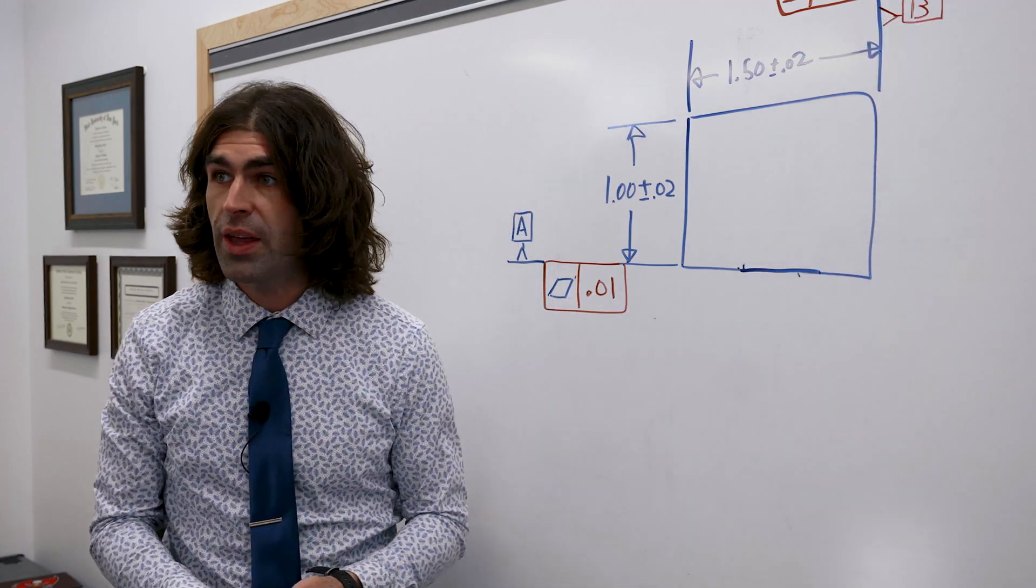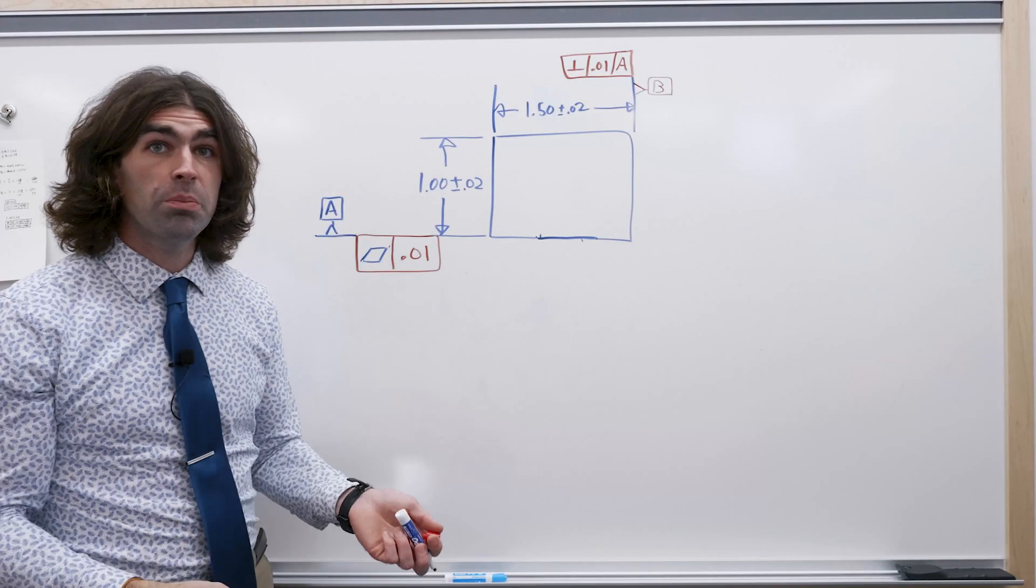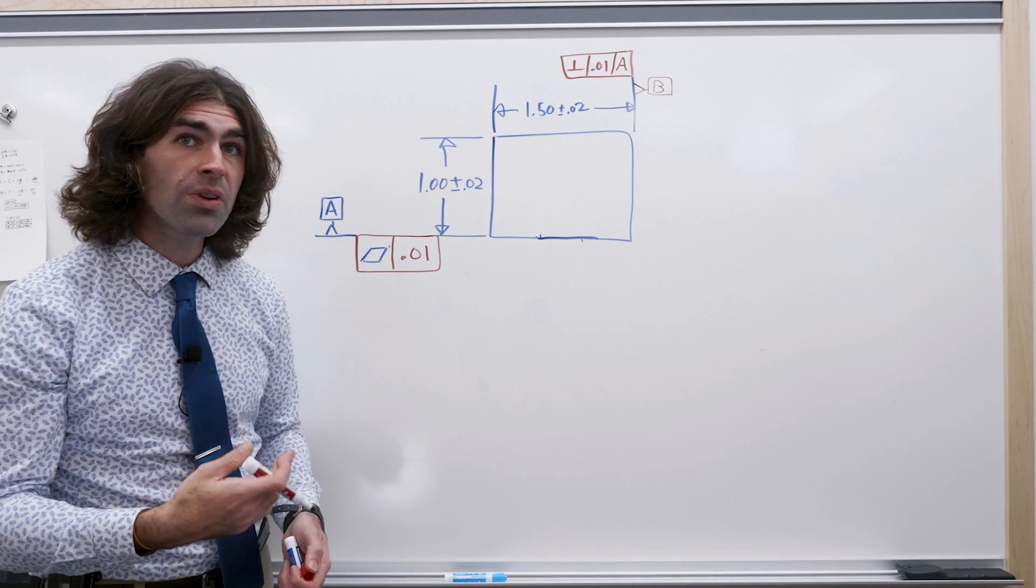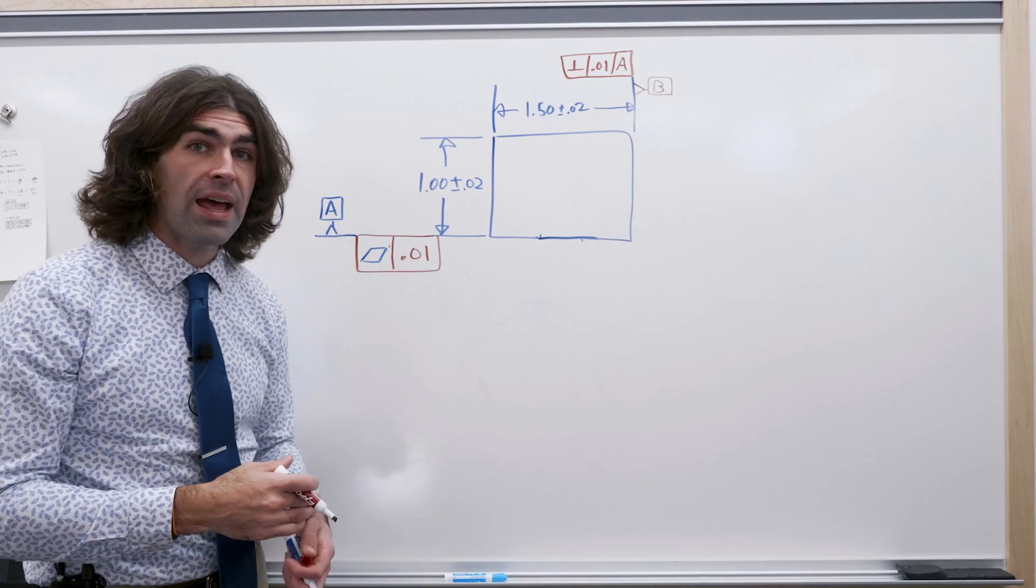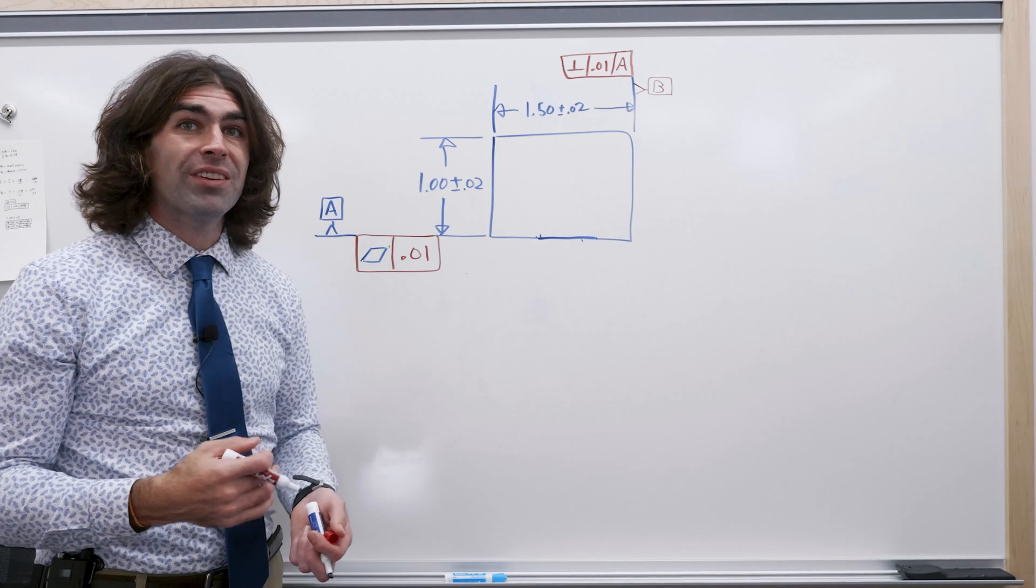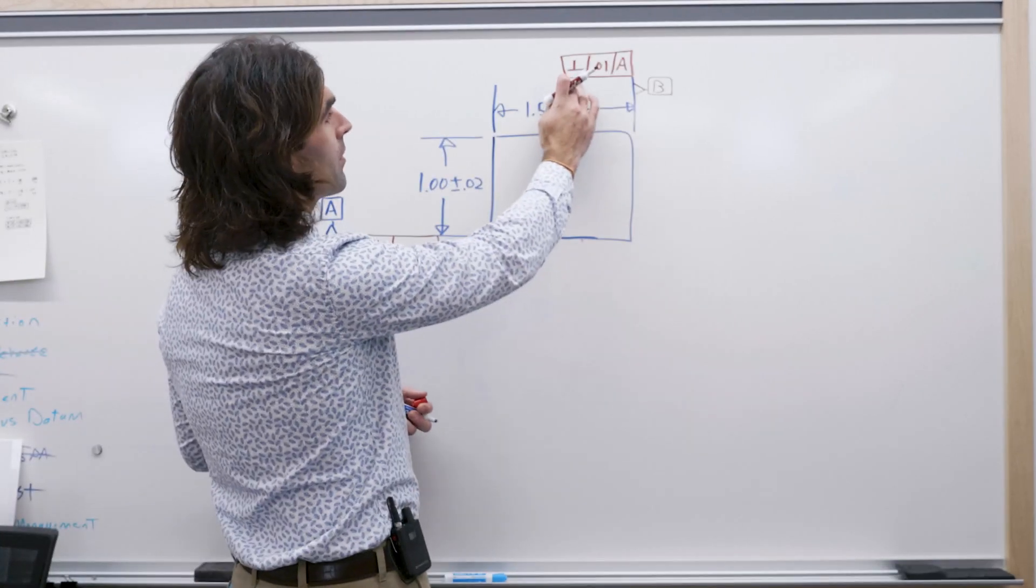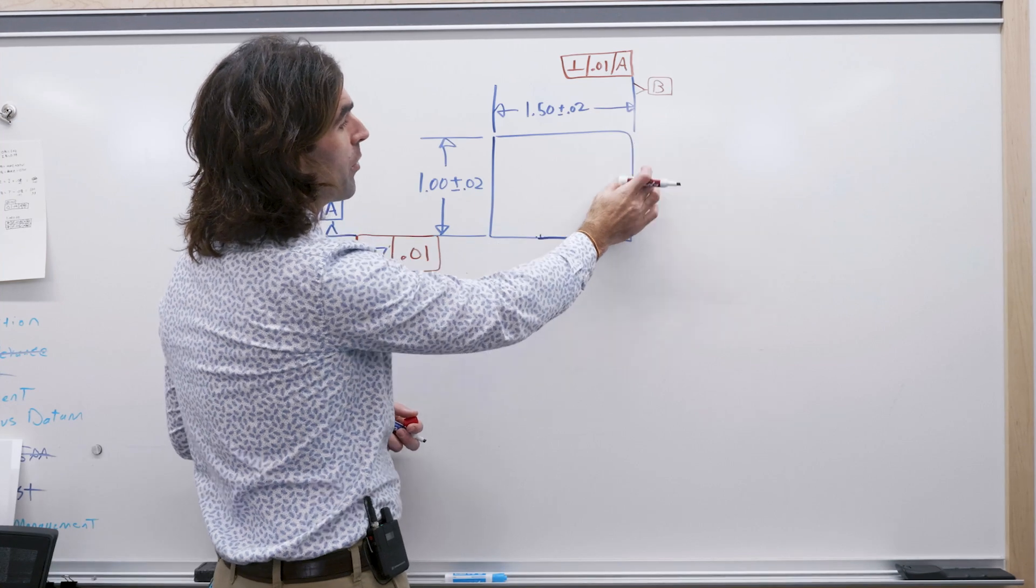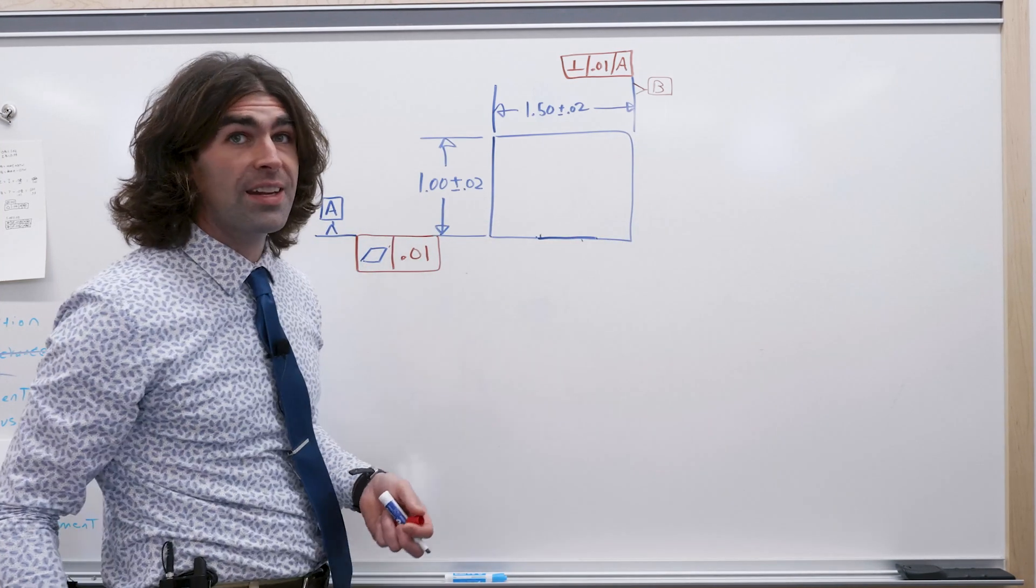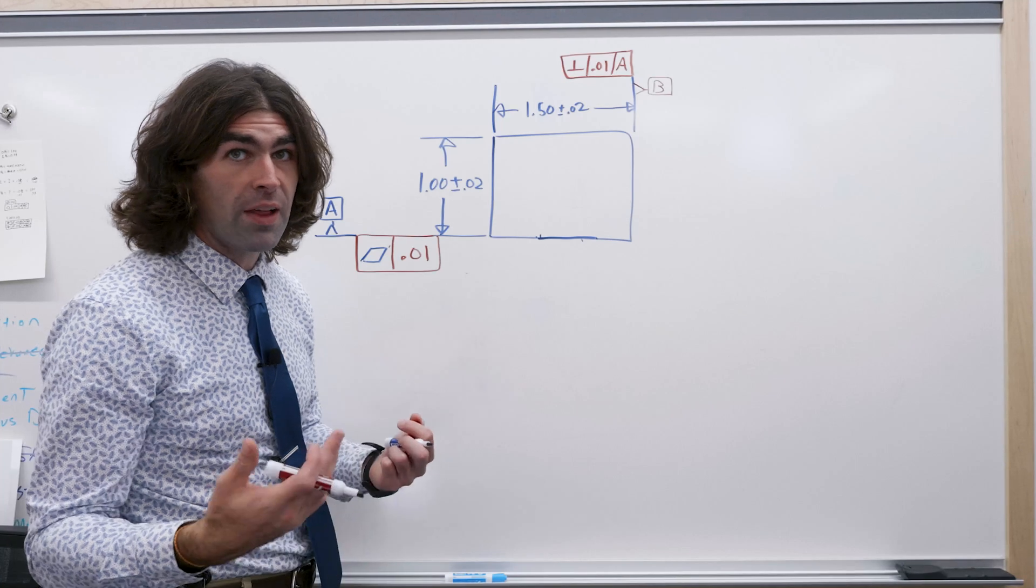Oftentimes that surface will also be datum B. So this is what's known as qualifying datums. You usually want your datums to have some kind of geometric tolerance on them. Now perpendicularity to parallel planes that are perpendicular to this datum in which the surface must lie.